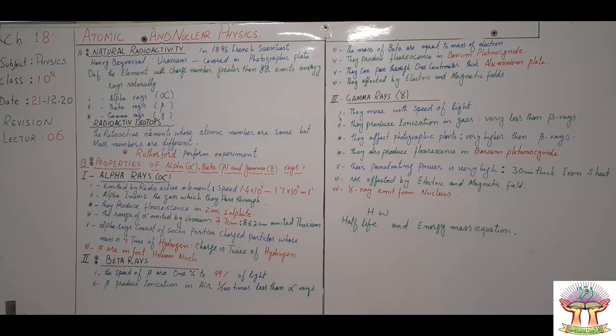Mass of beta rays is approximately equal to electron mass. Beta rays in barium platino cyanide produce fluorescent glow. They can pass through 1 cm thick aluminum plate. Electric and magnetic fields affect them.